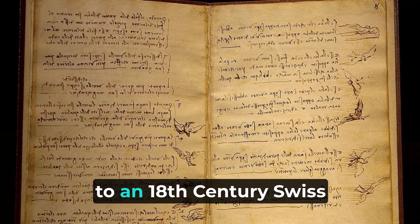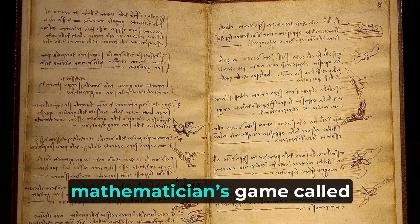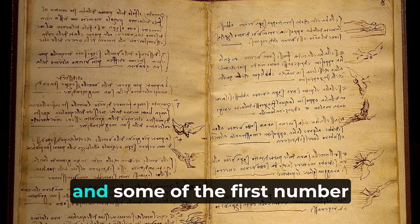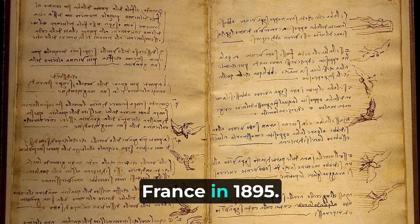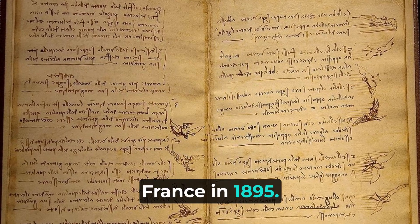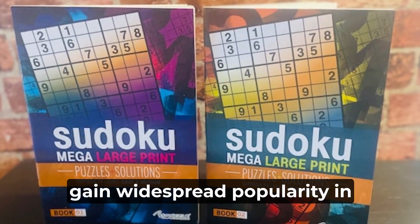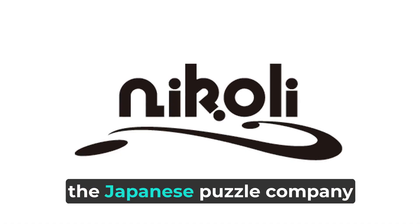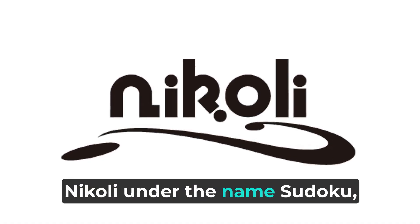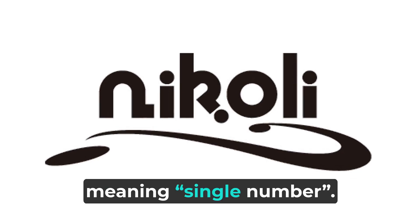The history of Sudoku dates back to an 18th century Swiss mathematician's game called Latin Squares, and some of the first number puzzles to appear in newspapers were published in France in 1895. The modern Sudoku only began to gain widespread popularity in 1986 when it was published by the Japanese puzzle company Nikoli under the name Sudoku, meaning single number.